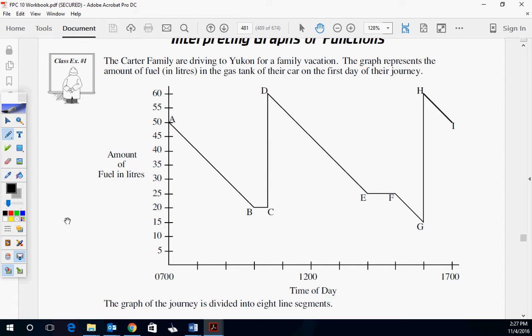For example, this first one: the Carter family are driving to Yukon for a family vacation. The graph represents the amount of fuel in liters in the gas tank of their car on the first day of their journey. So you've got to think about what's happening right here. They're driving, they're losing fuel, right?